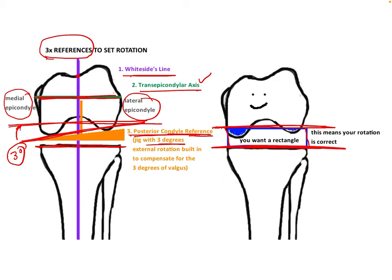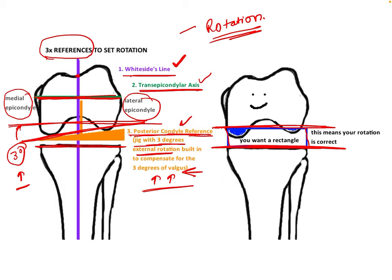These are the three lines we can use: Whiteside's line, the transepicondylar axis, and the posterior condyle reference. If using the transepicondylar axis, we do not need 3 degrees of external rotation. But if using the posterior condyle referencing, we need 3 degrees of external rotation to compensate for the 3 degrees of valgus in the native joint line. This will affect the rotation of the implant.